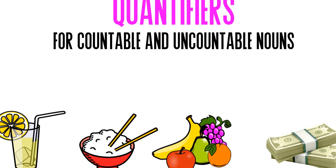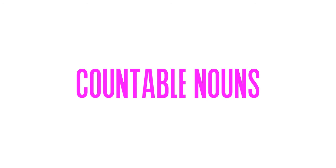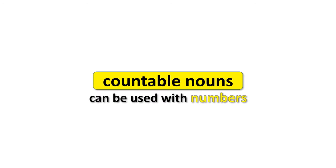If you have made a mistake or two, don't worry, because now we will talk about the grammar you need to know to avoid making the same mistakes again. We'll talk about countable and uncountable nouns and the quantifiers — words expressing quantity — that go with them. First things first: how do we know if a noun is countable? Whatever you can use together with a number is countable. It's that easy.